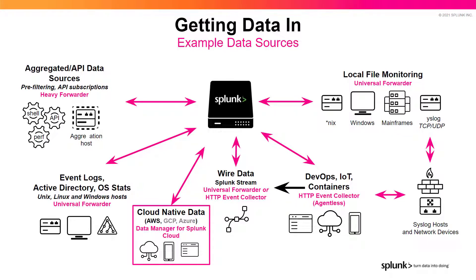Cloud-native data such as AWS, GCP, Azure, and Office 365. Wire data streaming, or sending into the HTTP Event Collector, or the HEC service. The HEC service is a token-based ingress method to collect data. DevOps, IoT, and containers via agentless HTTP Event Collectors, or HEC.